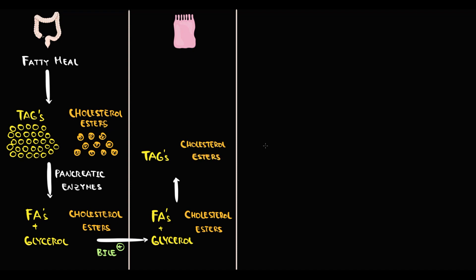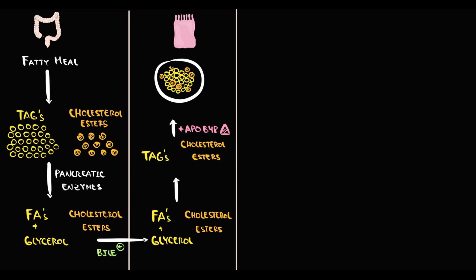Then the intestine adds to these lipids a specific apoprotein called ApoB48, and packs all of this into one particle called a chylomicron. As we can see, the chylomicron is mostly composed of triacylglycerols. The intestine then sends the chylomicron into the lymphatic circulation.